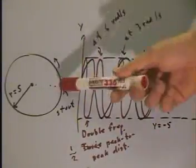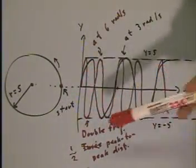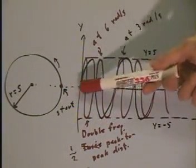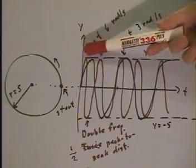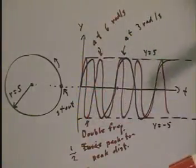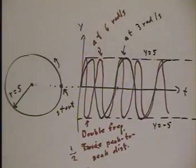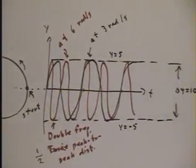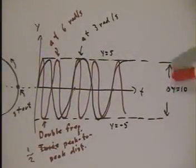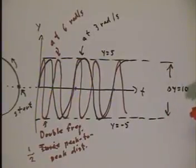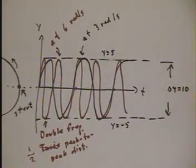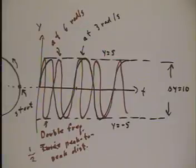We also notice that if the radius of this circle is 5, then we go from the 0 point on the axis up to plus 5 and down to negative 5. So that our maximum y value is 5 and our minimum y value is negative 5. And, of course, the distance between the maximum and minimum, or minimum and maximum y values, whichever you wish, the distance is 10.